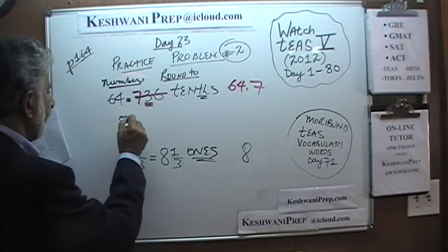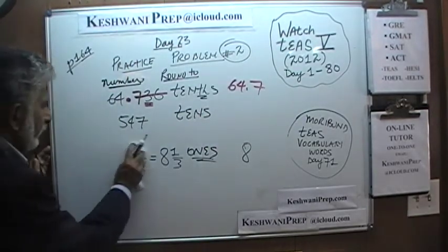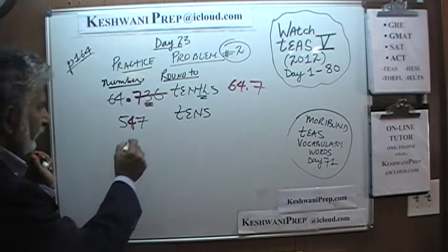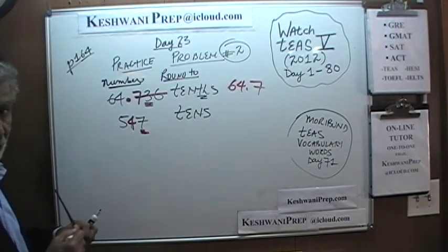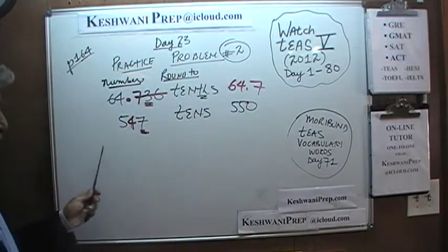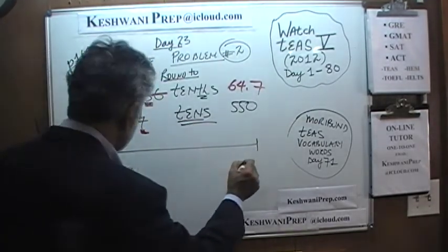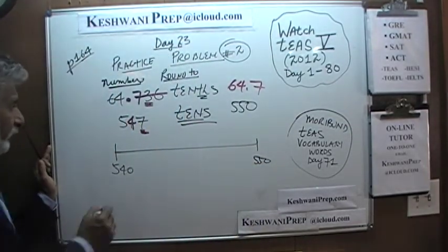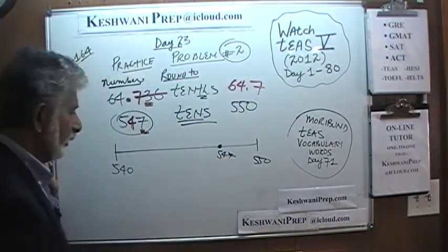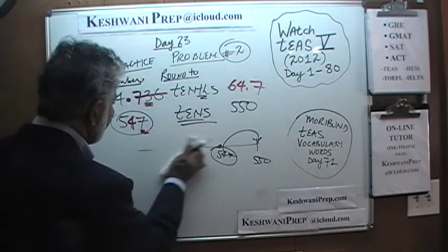Next: 547, rounded to nearest tens. The tens digit is right here; the unit digit is here. We look at the unit digit — is it five or more? Yes, it is. Since it is five or more, it becomes 550. We start at 540 and go up to 550 and ask where 547 falls. 547 is closer to 550 than to 540, so we round it up to 550.